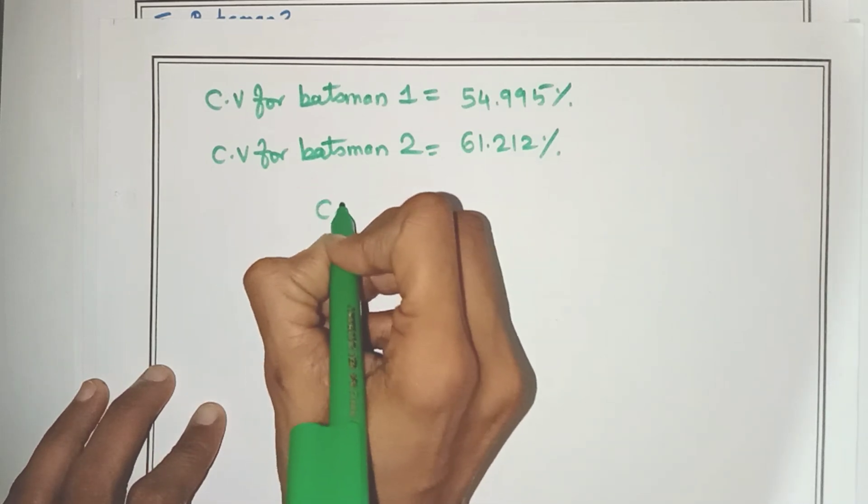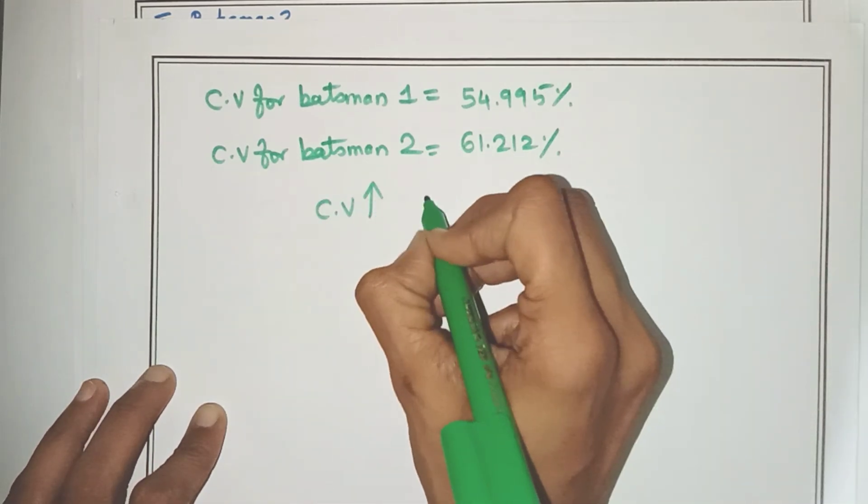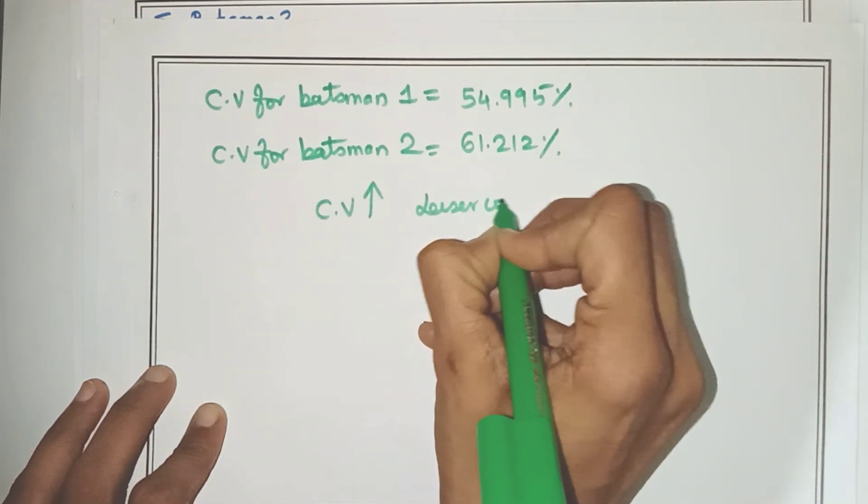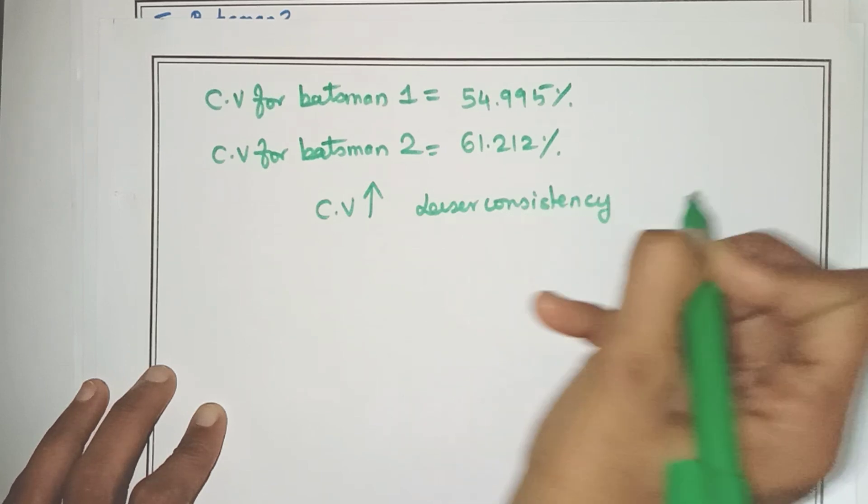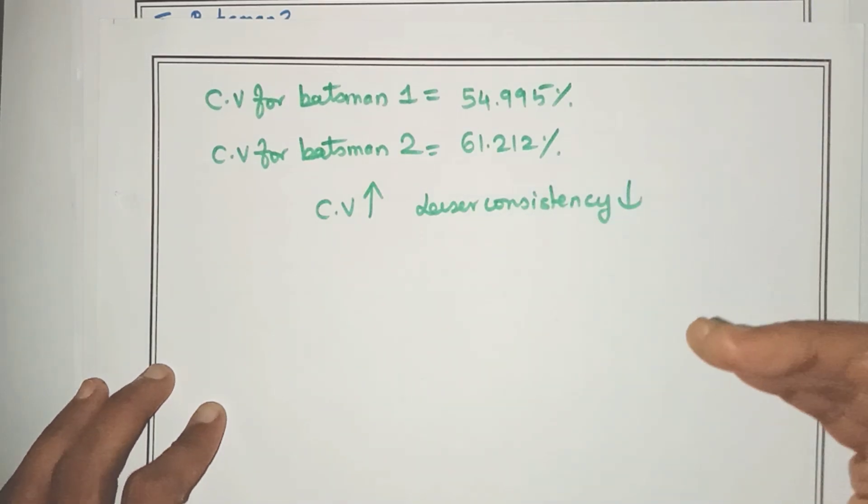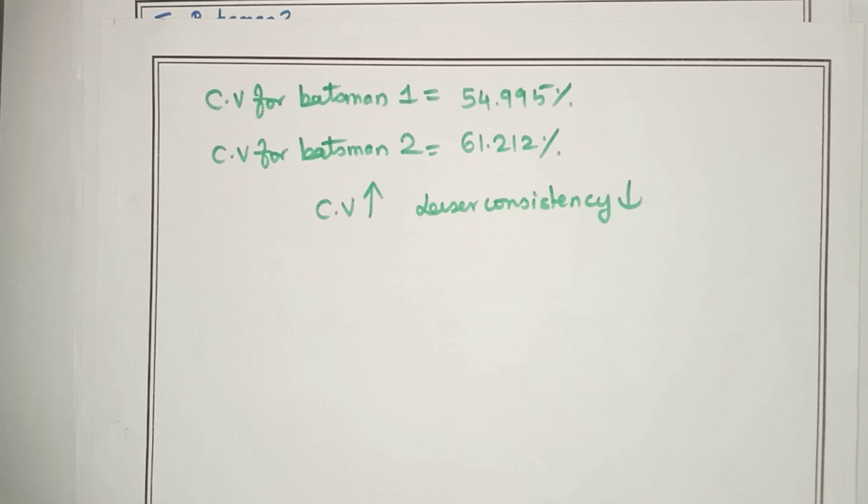So remember that the higher the CV, the lesser will be the consistency. So as the CV value increases, the data will be less consistent.